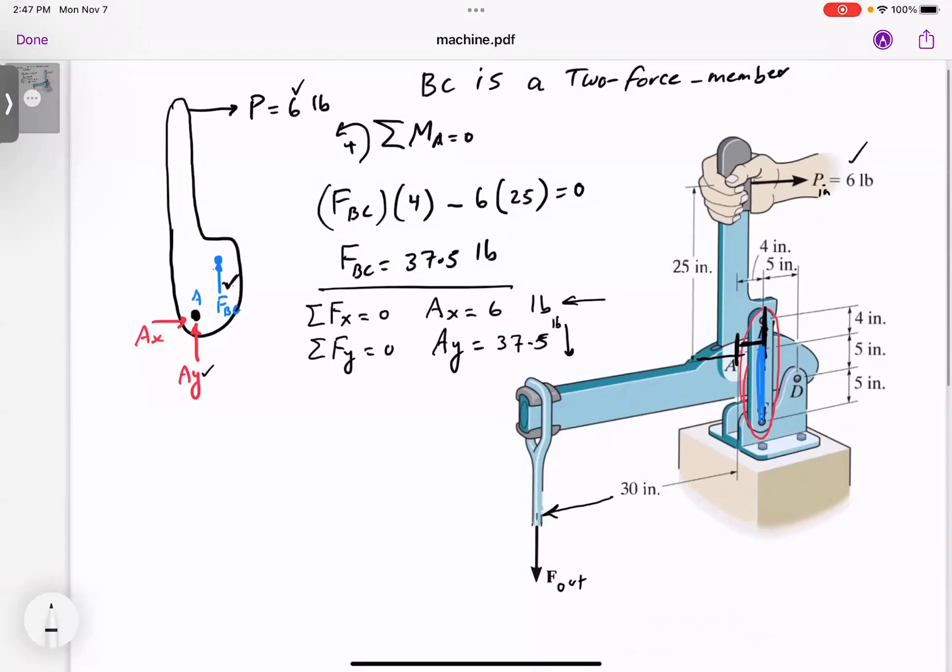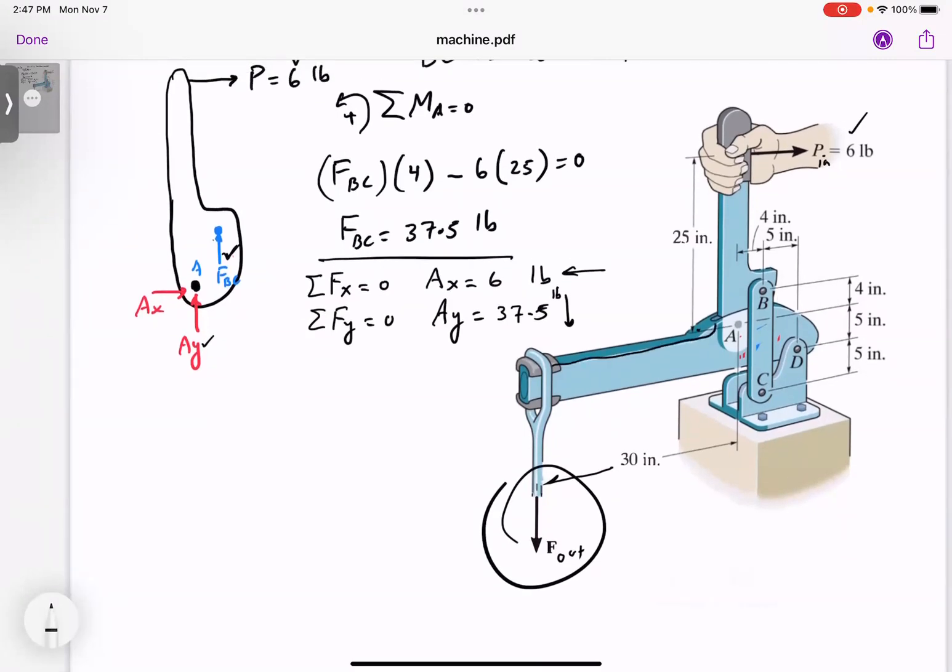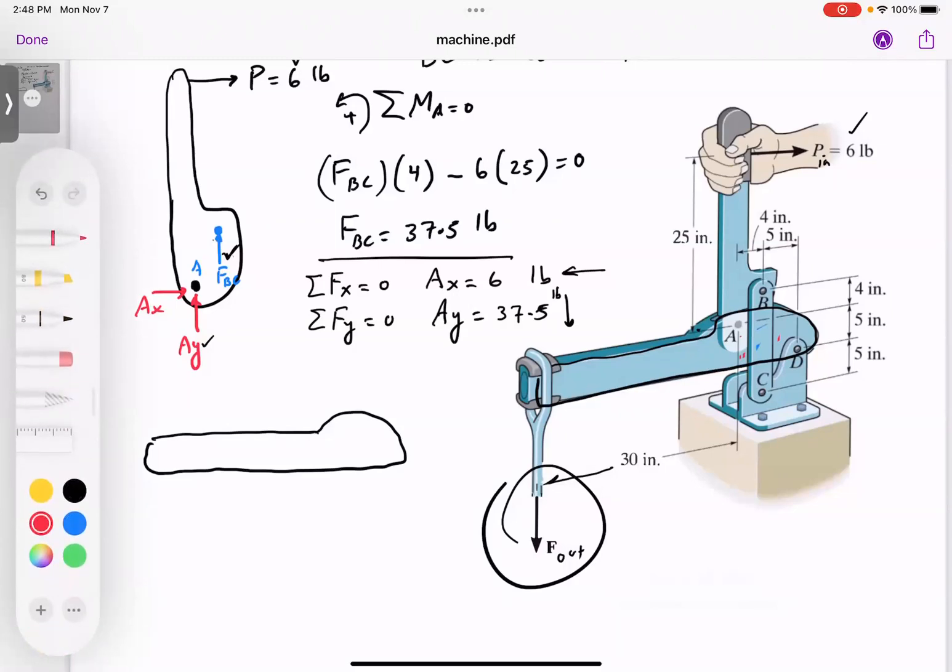Now you're almost done. Remember our objective is to find this force F out here. I'm going to draw the free body diagram of this piece right here. I start with this unknown F out. Notice at D I have a pin so I'll have two reactions Dx, Dy, but the good news is I'm going to take moments about it once I'm done with the free body diagram.